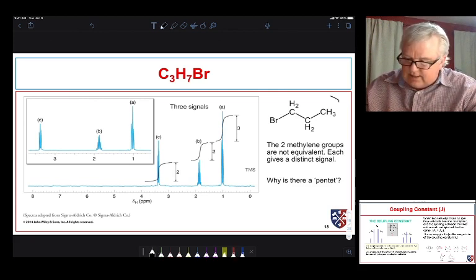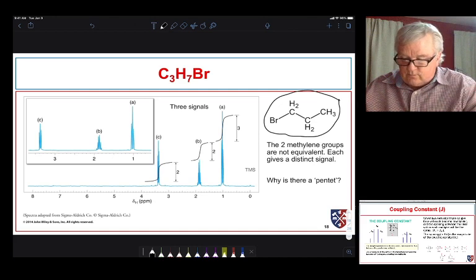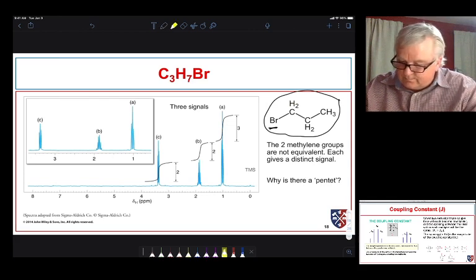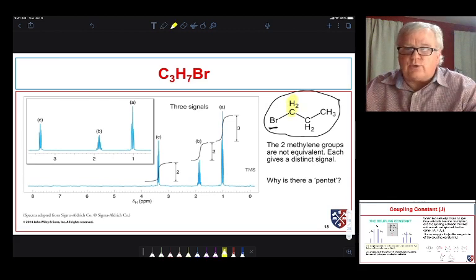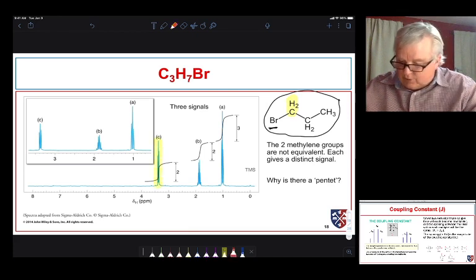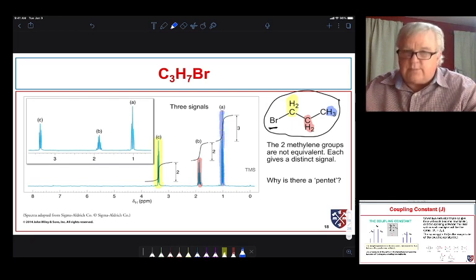Now it's convenient that this is drawn in such a way that the most electronegative portion of the molecule, that is the portion with the bromine, is on the left. And the reason is because we expect to see these protons which are directly attached, we expect them to be furthest downfield. Right there. The next set of protons are the next closest to that electronegative group. They're right here. And finally, our third set of protons, we expect to be furthest upfield. We expect it to be right there.